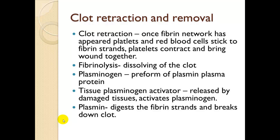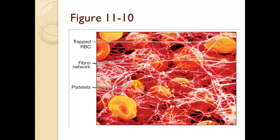Clot retraction occurs once the fibrin network has appeared — platelets and red blood cells stick to fibrin strands, and platelets contract to bring the wound together. Fibrinolysis is the dissolving of the clot. Plasminogen is the preform of plasmin, and forming plasmin causes the clot to break down and dissolve — this is the basis of all thrombolytics or clot-busting agents. Tissue plasminogen activator (TPA), released by damaged tissue, activates plasminogen; plasmin then digests fibrin strands and breaks down the clot.